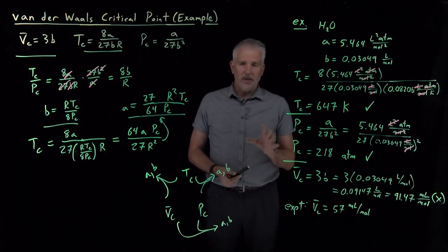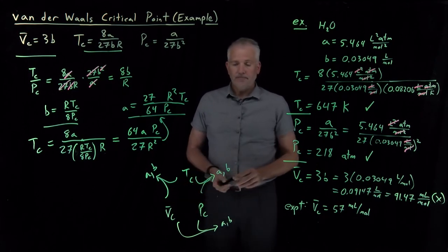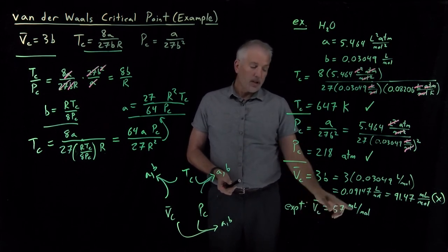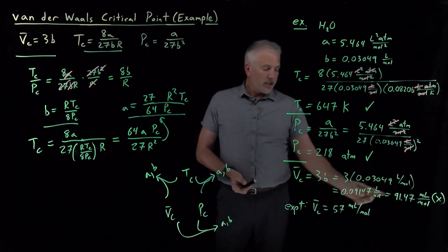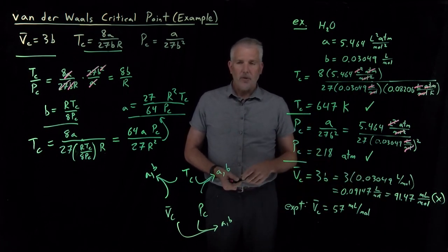I can't, because the Van der Waals model is not a perfect model of a fluid or a gas or a liquid, I can't perfectly predict all three of them. I can perfectly predict any two I want, but one of them is going to be wrong, and the fact that it's wrong by this much tells you how approximate the Van der Waals equation gets when you get near the critical point.